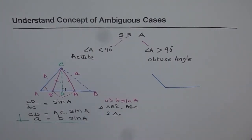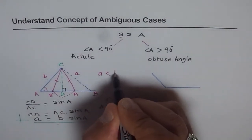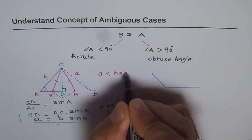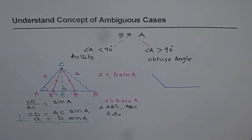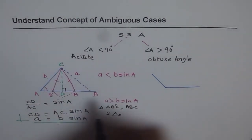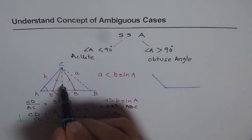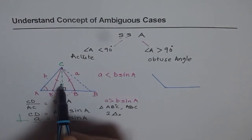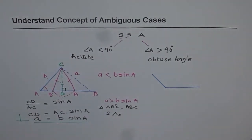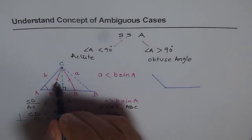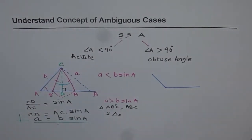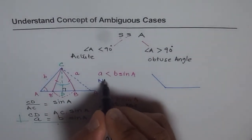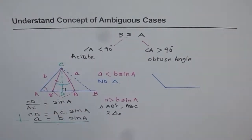Now imagine the third case: A is less than B·sin(A). B·sin(A) is the length CD, so if A is less, it is not even reaching point D. In that case, you cannot form a triangle at all. So if A is less than B·sin(A), we have no solution — no triangle is formed.